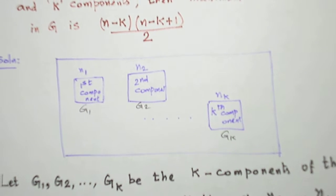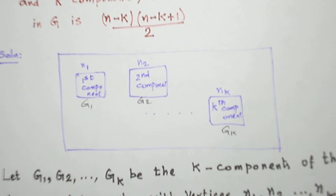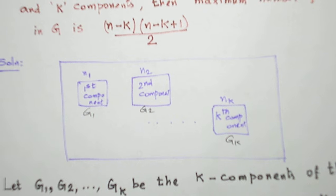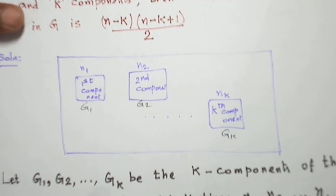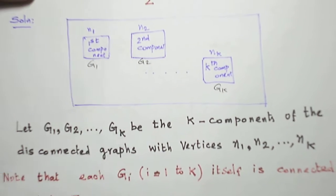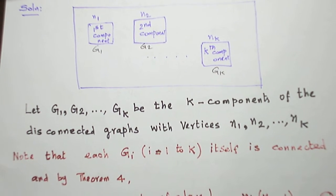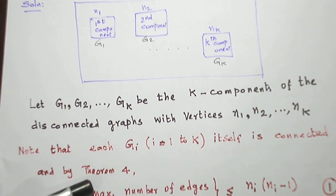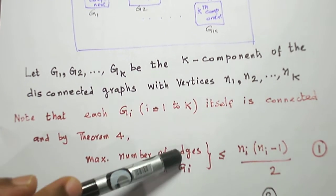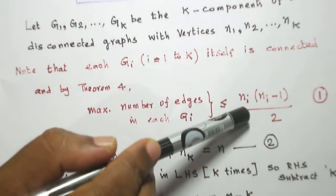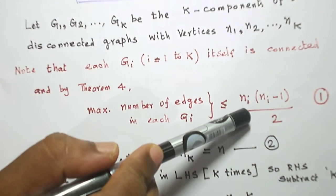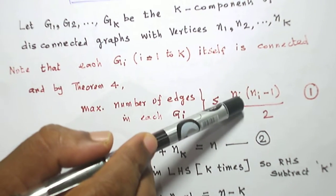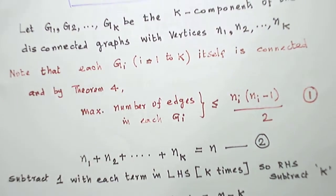Within a component, all the vertices are perfectly connected, so any two vertices within a component are connected by a path. Now, I take the k components in the disconnected graph with vertices n1, n2, ..., nk. By Theorem 4, the maximum number of edges in each component — for the i-th component — is n1(n1-1)/2. Refer to Theorem 4 in the last video.